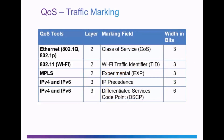Looking at QoS traffic marking, traffic marking happens at both Layer 2 and Layer 3. At Layer 2, we have class of service, or COS, which happens using the 802.1Q VLAN tagging and 802.1P quality of service protocols. Traffic marking at Layer 2 happens on the local area network and is limited to the LAN using Layer 2 switches. Under Wi-Fi, traffic marking happens with the Wi-Fi traffic identifier field, or TID. With MPLS, you have the experimental, or EXP, field, also at Layer 2.